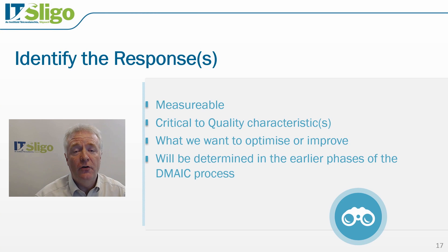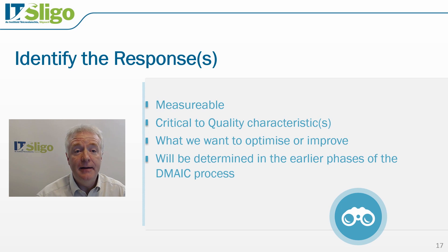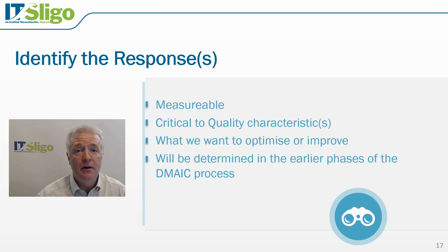In relation to the responses or the outputs of our experiment, these need to be measurable. The responses will also be those characteristics which are critical to quality, and the earlier phases of our domain process will have identified those. It will also have identified from our analyze phase which aspects we need to optimize or improve.